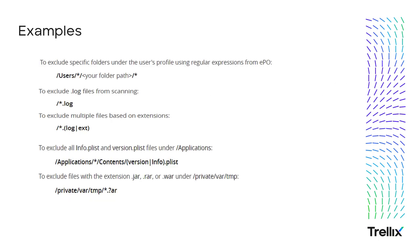For exclusion path examples: to exclude user profiles from scanning, use /root/user/*/path. To exclude log files, use /root/*.log. To exclude all plists from the application folder, use the appropriate syntax with question mark. For Java applications that write jar and war files to /private/var/temp, you can use an asterisk and question mark with *?ar as the file type to exclude all jar and war files.